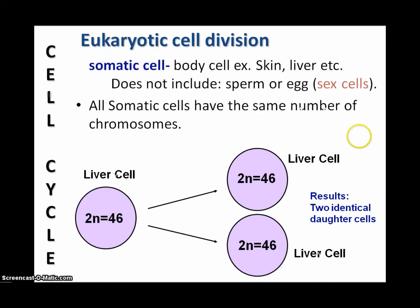The second is that the cell division process takes place only in somatic cells. Somatic cells means anything that is related to body cells. Eye cells, skin cells, liver cells, hair cells, anything that does not include sperm cells or egg cells, which are clearly understood to be sex cells.